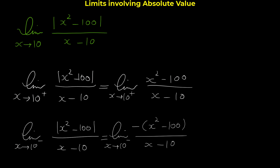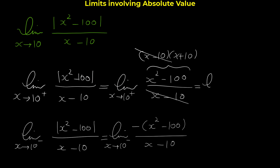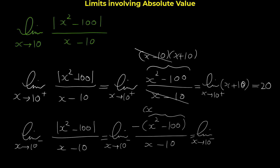Now we evaluate both limits. Using the difference of squares: x²-100 = (x-10)(x+10). For the right-hand limit: (x-10)(x+10)/(x-10) = x+10, and as x→10⁺, this equals 10+10 = 20. For the left-hand limit: -(x-10)(x+10)/(x-10) = -(x+10), and as x→10⁻, this equals -(10+10) = -20.